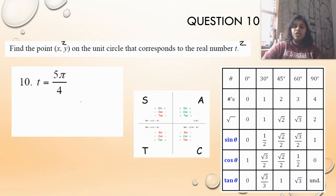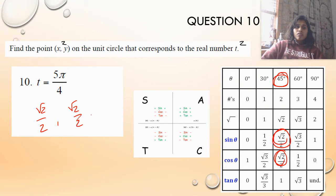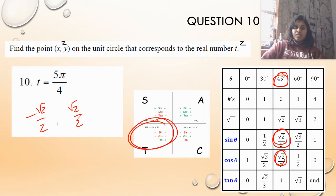Let's do it one last time using the chart trick. With the chart already filled out, I go over to π over 4, write my x and my y. Then I check my ASTC — I know I'm in quadrant 3, which means both x and y are negative. Done.